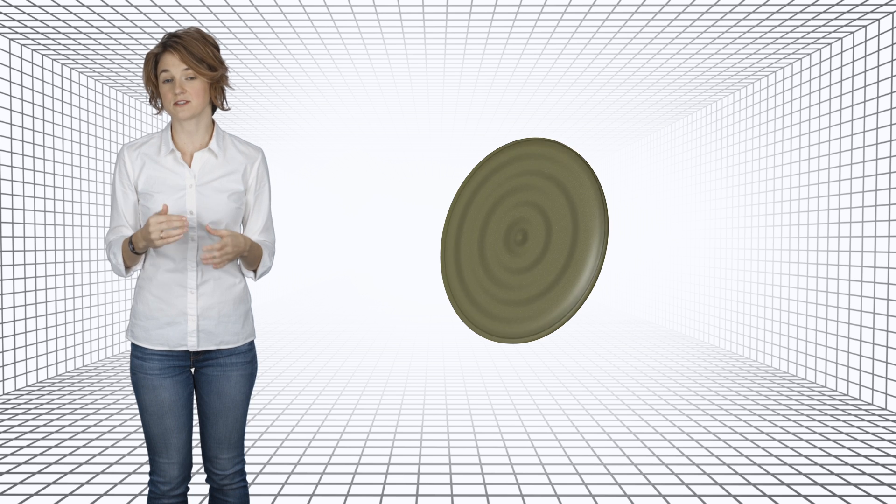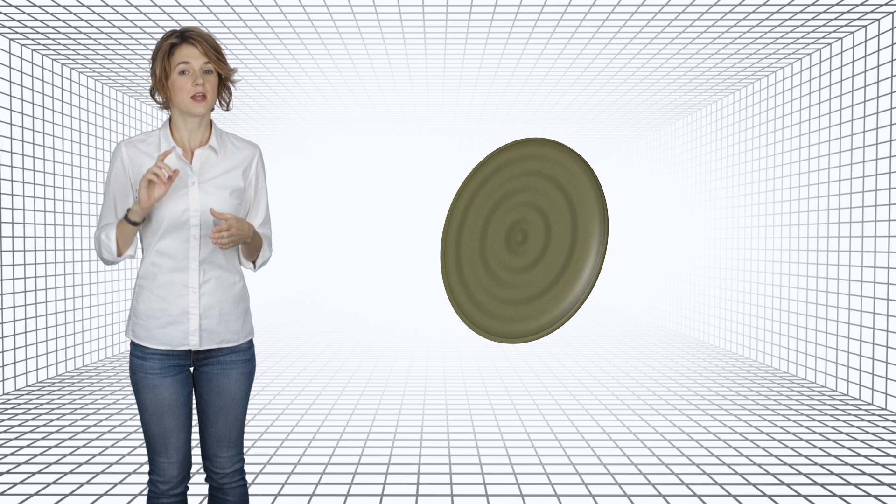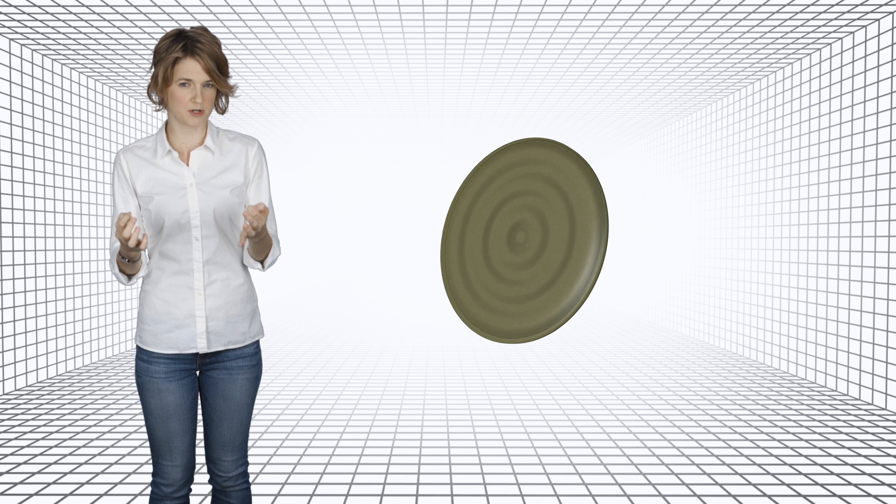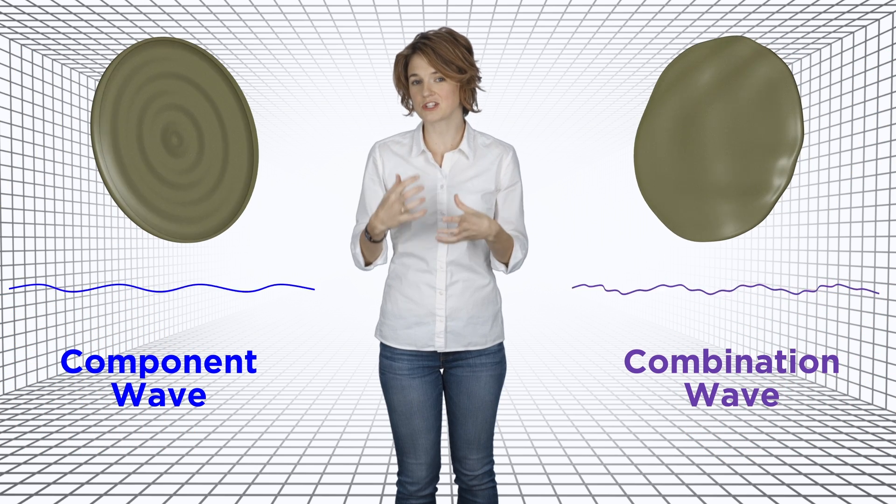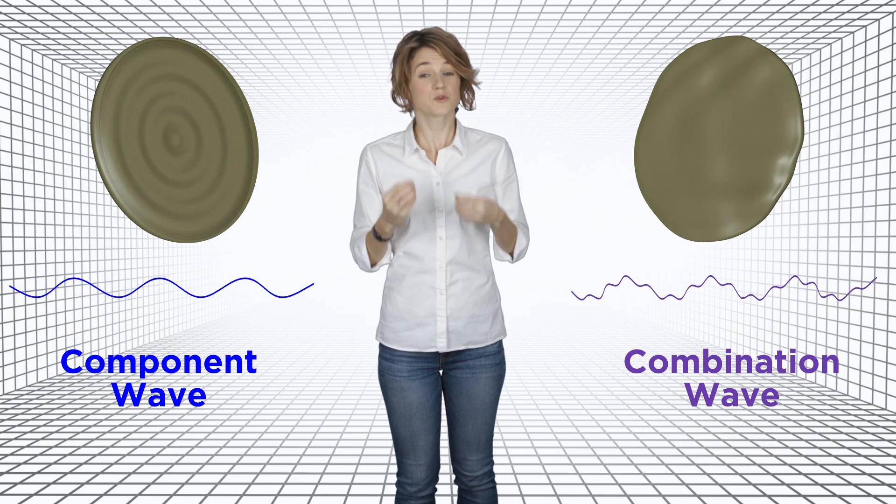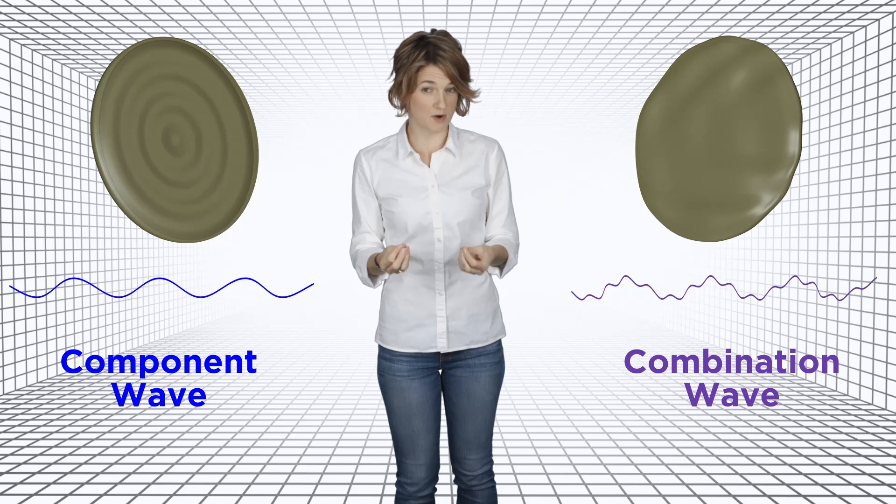You can hear the frequencies of those component waves. In one dimension, we use the length of the string to compute the frequencies it could produce. 1 over 2L, 1 over L, 3 over 2L, and so on. In two dimensions, we can use the shape of the drum to figure out what frequencies it produces. The tones it makes are combinations of these frequencies. So we can determine what sounds the drum makes.